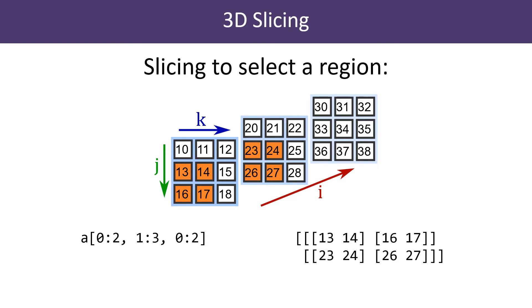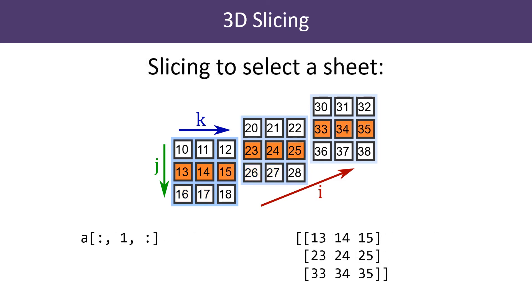You can select any cuboid region of the array in this way. Here is another case. We have used an index 1 in the second dimension, which means we are selecting every element that has a row value of 1. This gives us a horizontal sheet as shown.